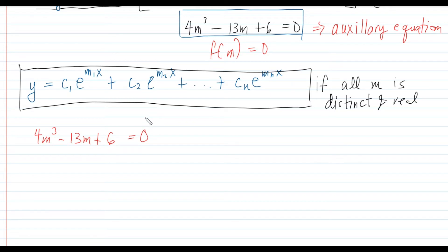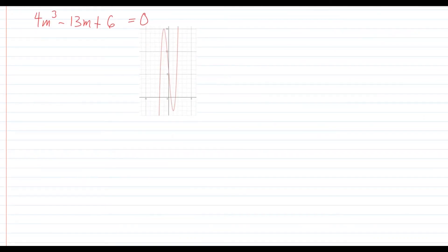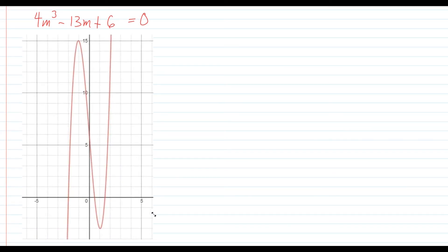We need to recall our algebra — when an equation is set equal to 0, we are solving for the roots. One technique commonly used is trial and error, substituting values of m until you find one that gives 0, then using synthetic division. To avoid trial and error, we can use a graphing utility. I've graphed 4m³ minus 13m plus 6, which in the graphing tool appears as y equals 4x³ minus 13x plus 6.